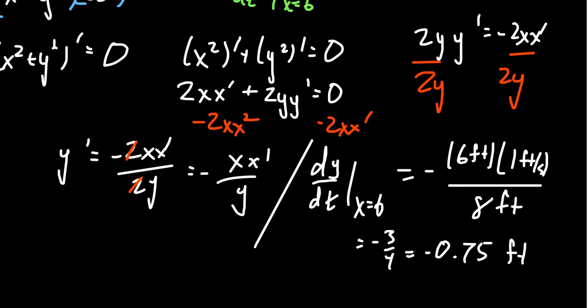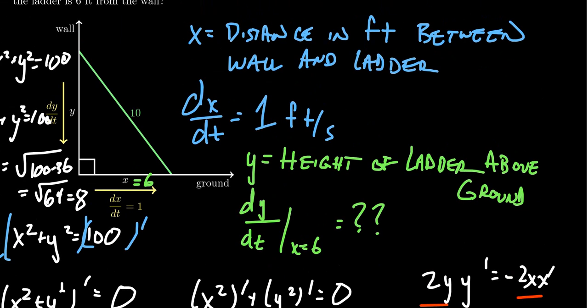Notice that the answer is negative 3/4. Why is it negative? As the distance from the wall to the ladder increases — the bottom getting farther away — the portion touching the wall has its height above the ground getting smaller and smaller. So the velocity of the falling ladder is negative because Y, the height, is decreasing over time. This gives us an example of how to solve a related rates problem involving a right triangle and the Pythagorean relationship.